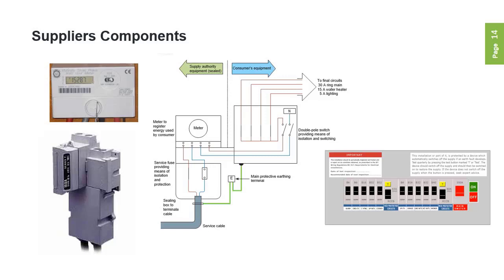In newer installations and in houses by request, the supply authority will fit a local isolator, and the contractor will have access to the outgoing connections as these are not sealed. So if you're doing a rewire or changing the distribution board, you've got access to the tails and can isolate everything safely when doing so.